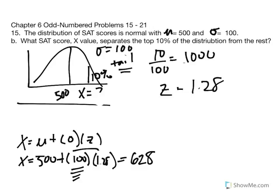A score of 628, equivalent to a Z score of 1.28, partitions the distribution with the top 10% in the tail. If a university were to say they only take individuals in the top 10th percentile on the SAT, students would have to score 628 or above. Percentiles are always understood as that score and above.